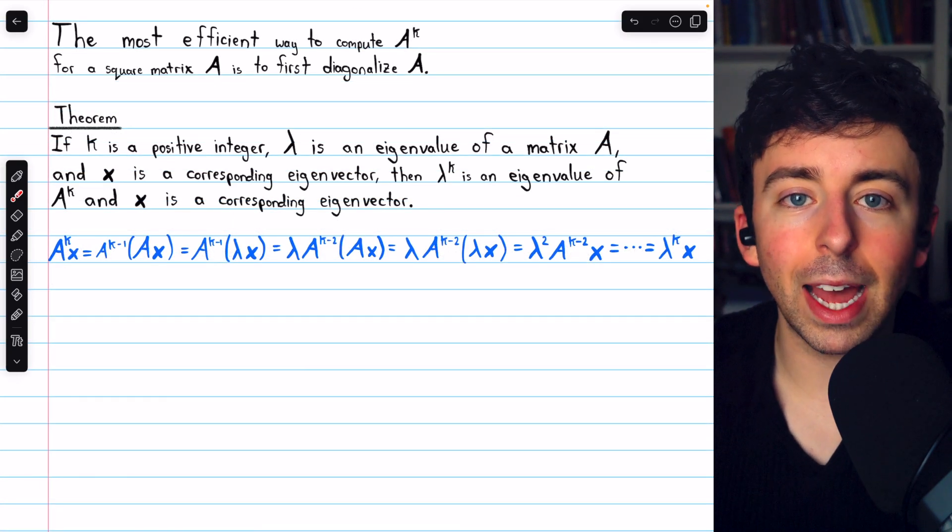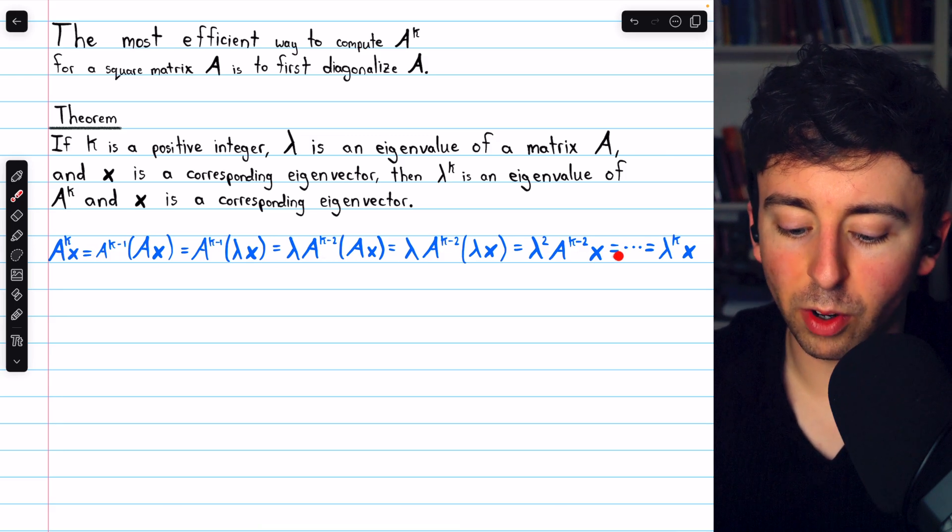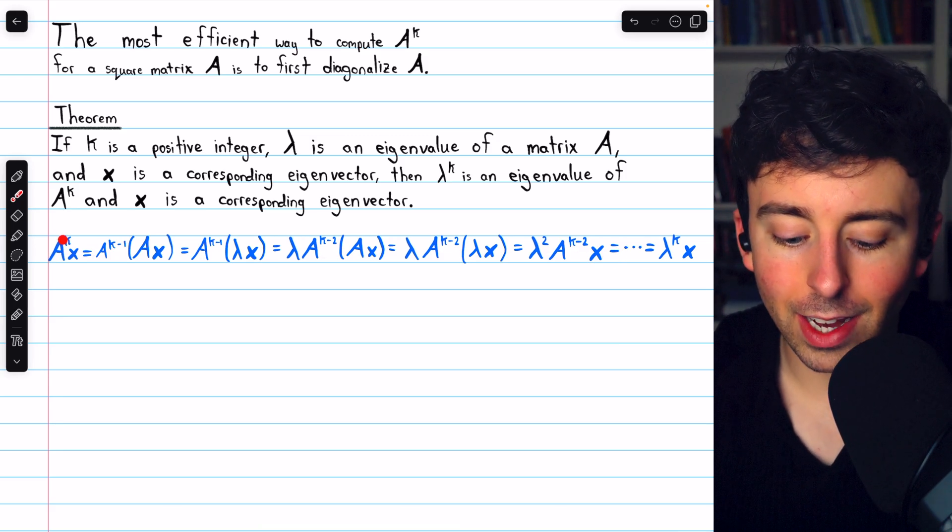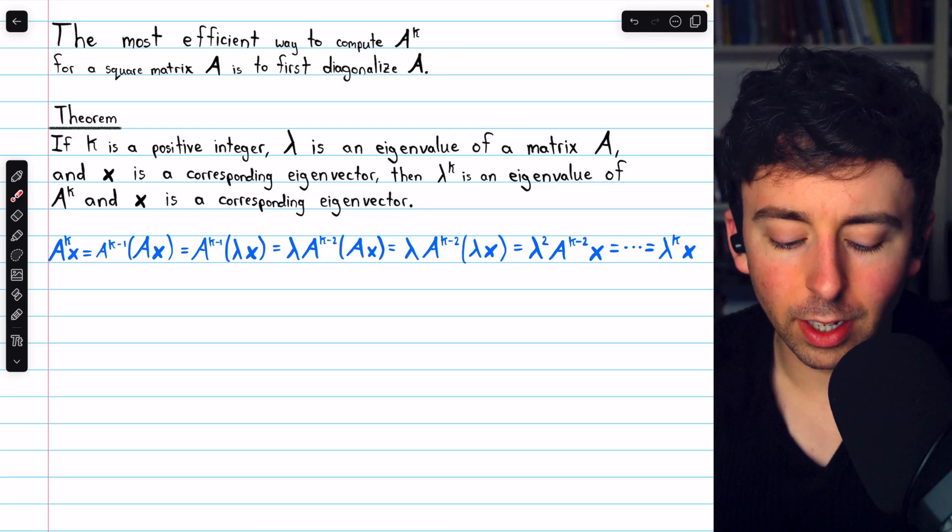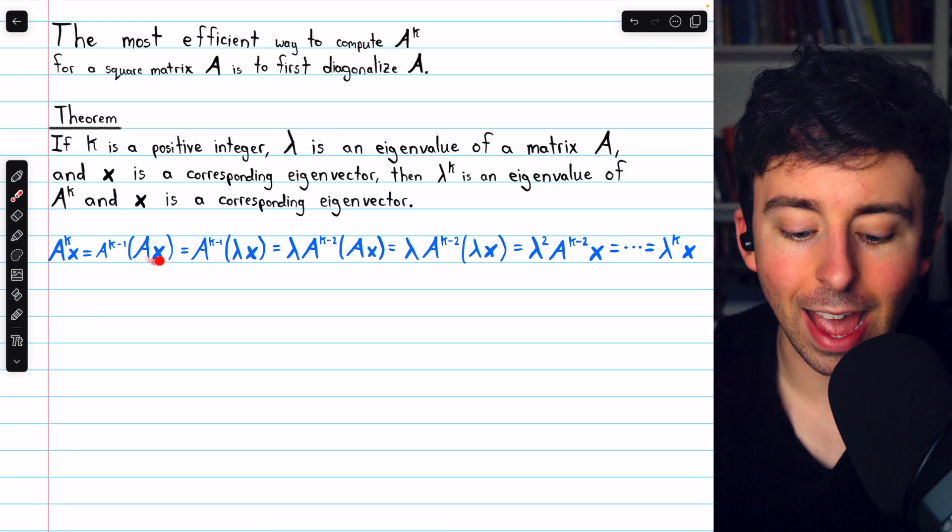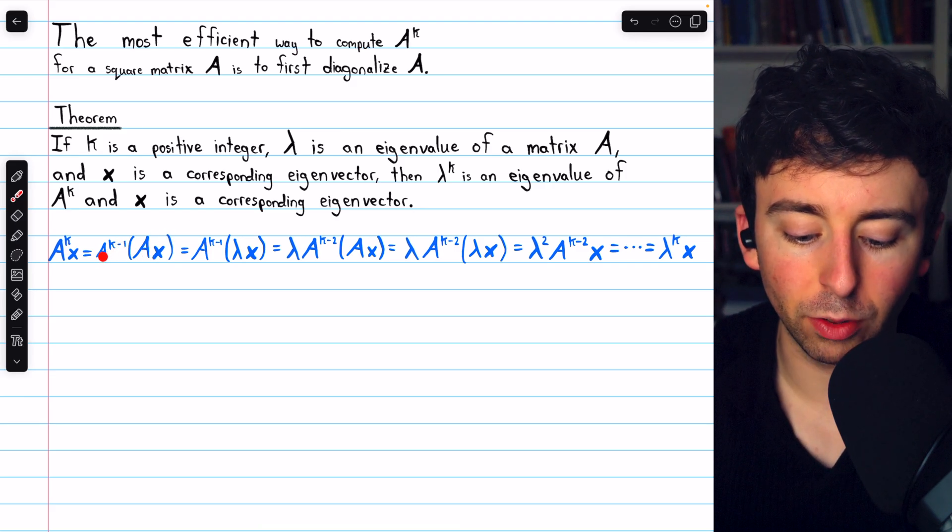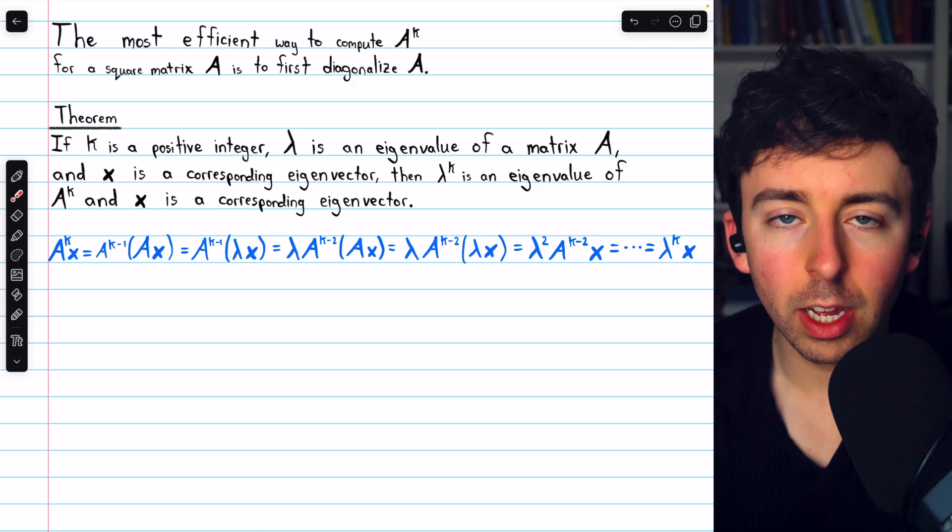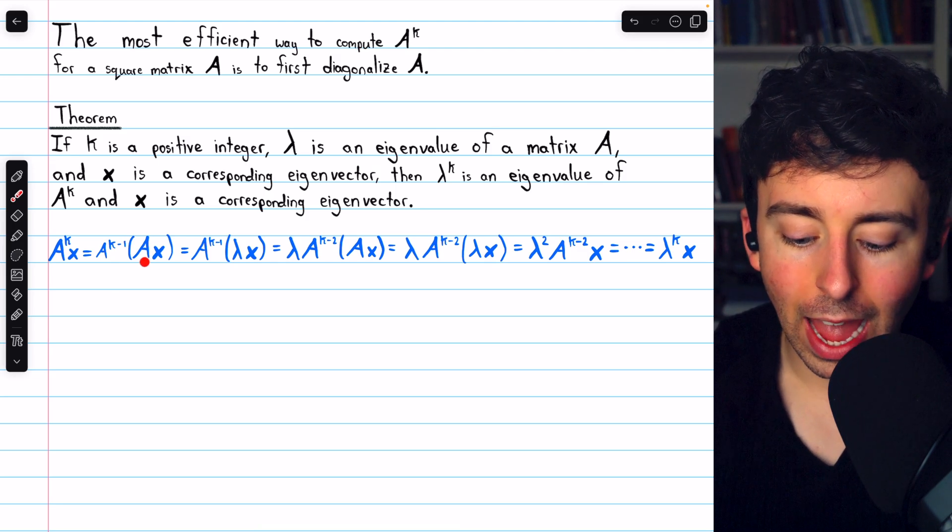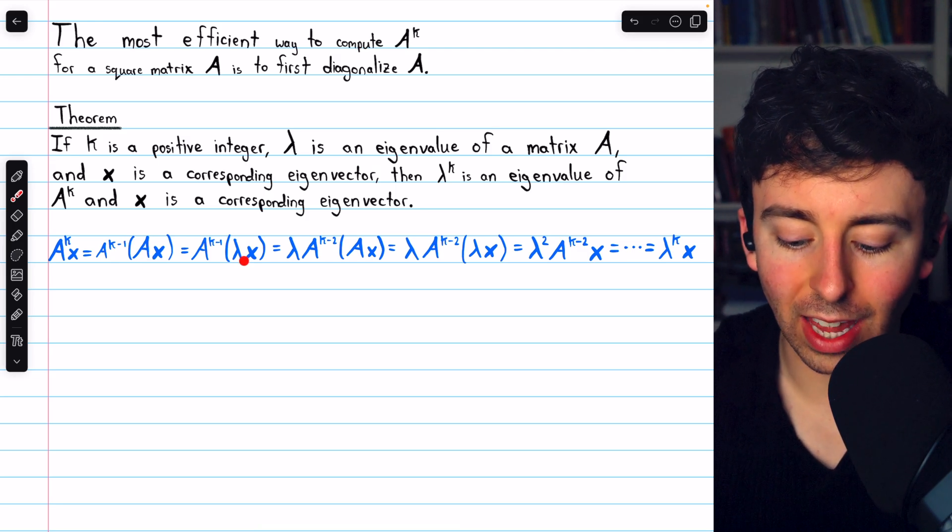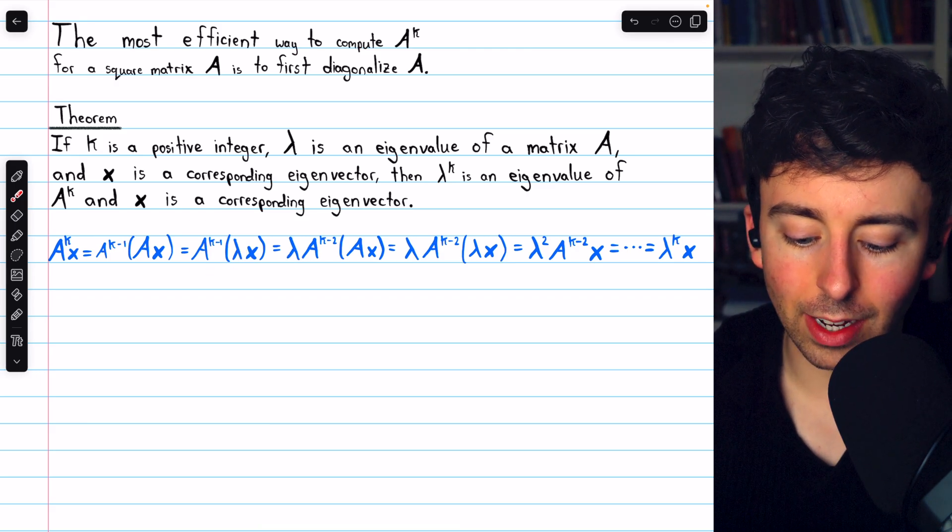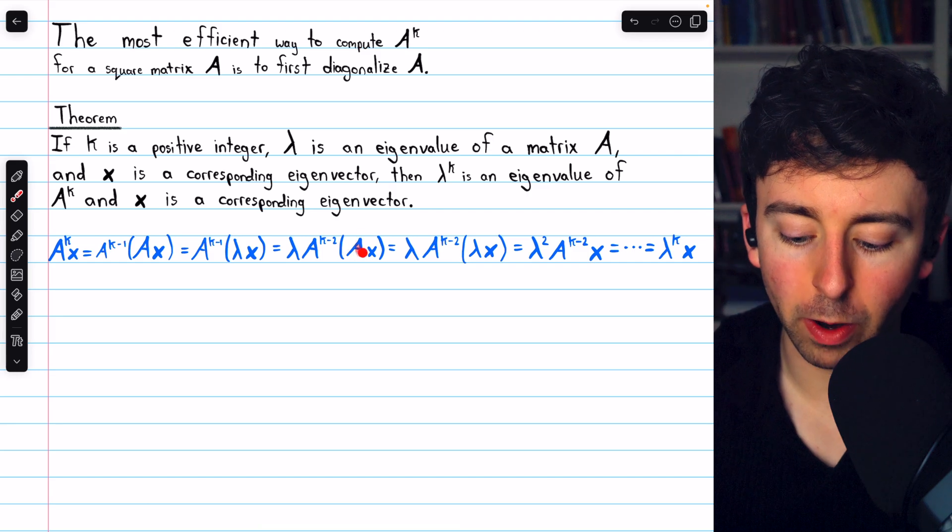This can easily be proven by induction, but this long string of equations gives you a good idea of why it's true. If we consider A to the k times x, we could take one factor of A out and pair it up with the x, which would leave k minus 1 factors of A behind. But since we've assumed that x is an eigenvector of A, A times x is just lambda times x. Then we could take that lambda out in front, and we could take another factor of A out to pair it with x.